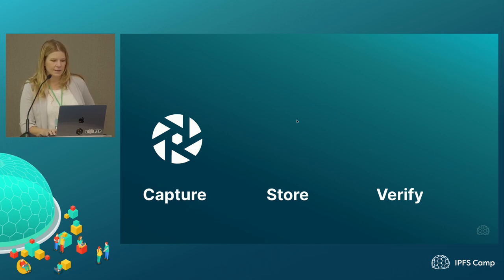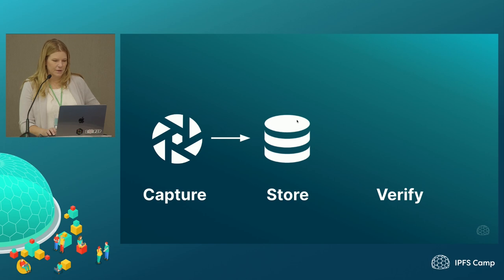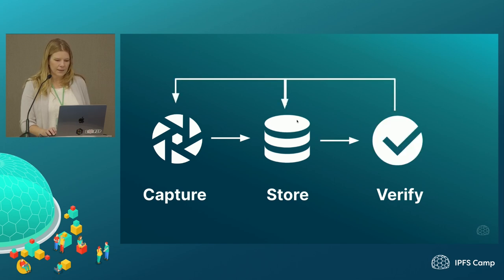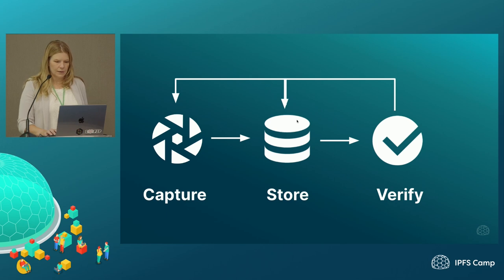We want to create provenance data with each change of custody or edit to a piece of media. This is, of course, an iterative process of capture, store, and verify. The data can and should be stored redundantly with each step and verified often. Authenticated Attributes is a powerful tool that we added to this process — and by 'we' I mean the Starling Lab engineering team — to enable this traceable immutable record of provenance closer to glass to glass.